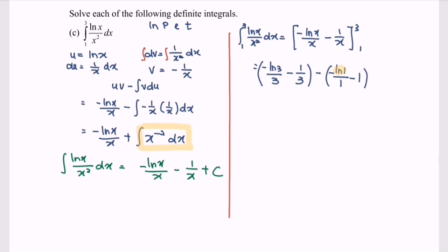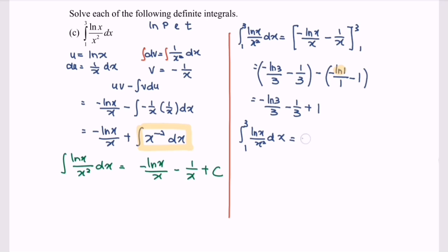Since ln 1 equals 0, the lower limit gives 0 minus 1, which is negative 1. Simplifying the full expression: negative ln 3 over 3 minus 1 over 3, minus bracket negative 1. This gives negative ln 3 over 3 minus 1 over 3 plus 1. Therefore, the integral of ln x over x squared with respect to x for the limit 1 to 3 is equal to negative ln 3 over 3 plus 2 over 3.